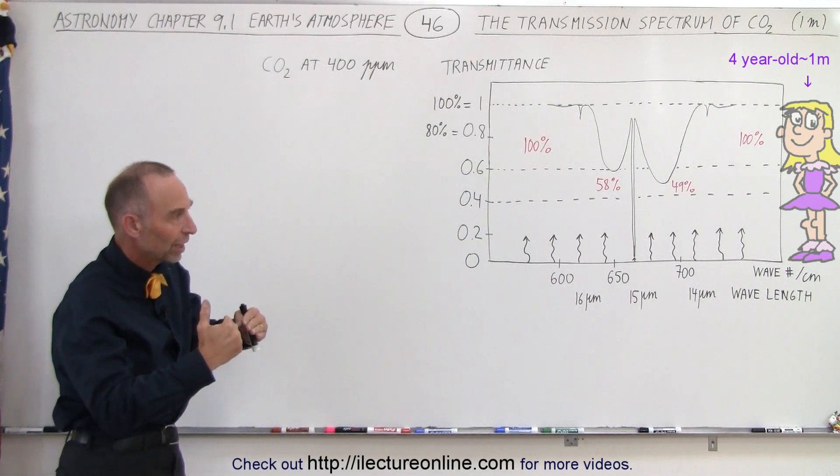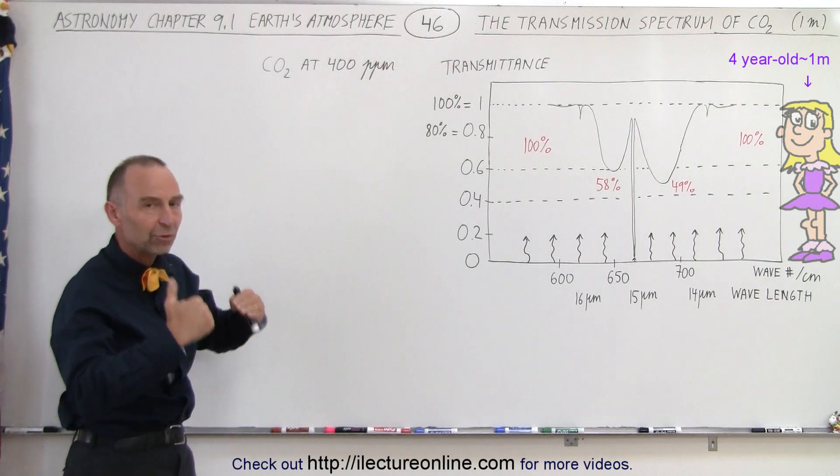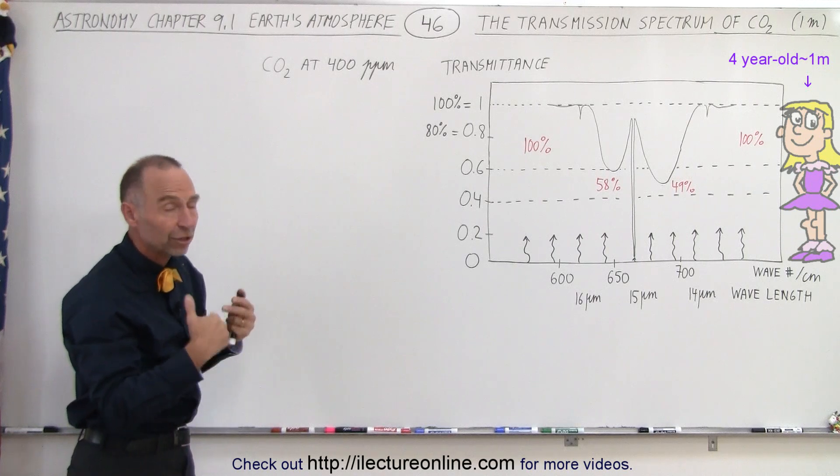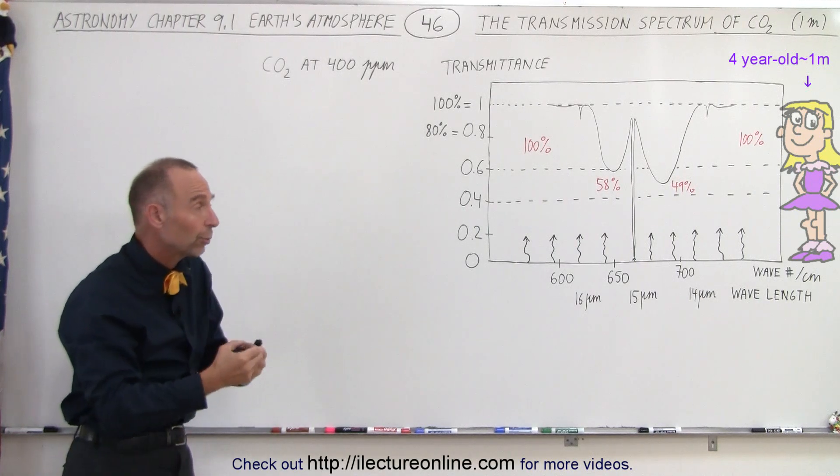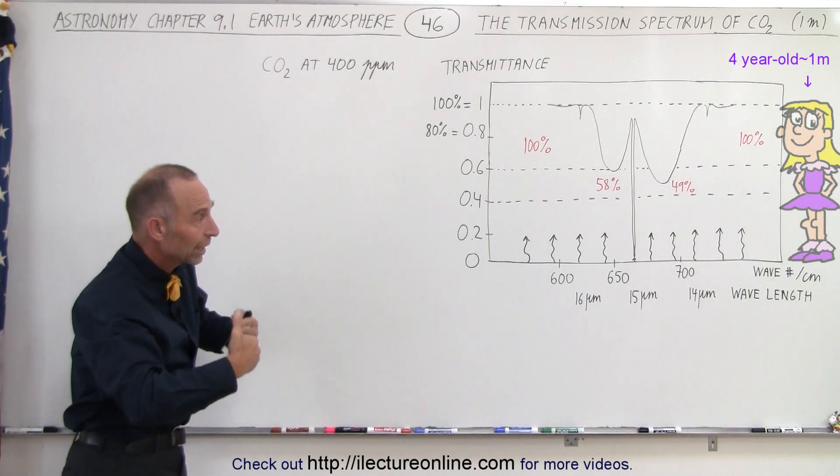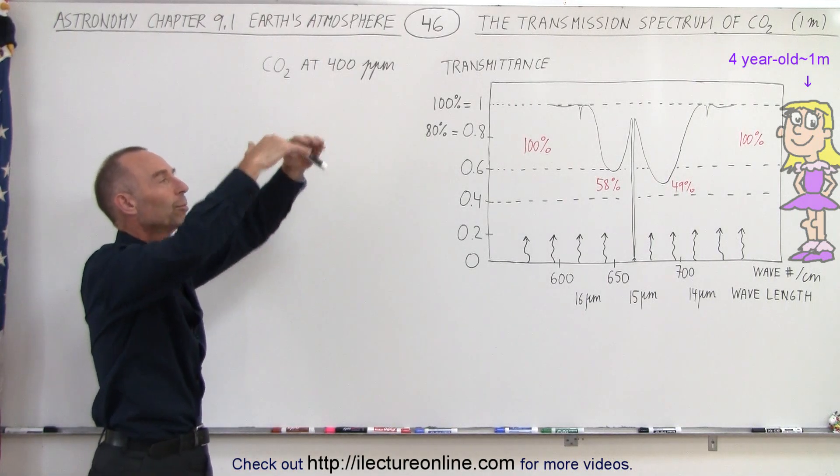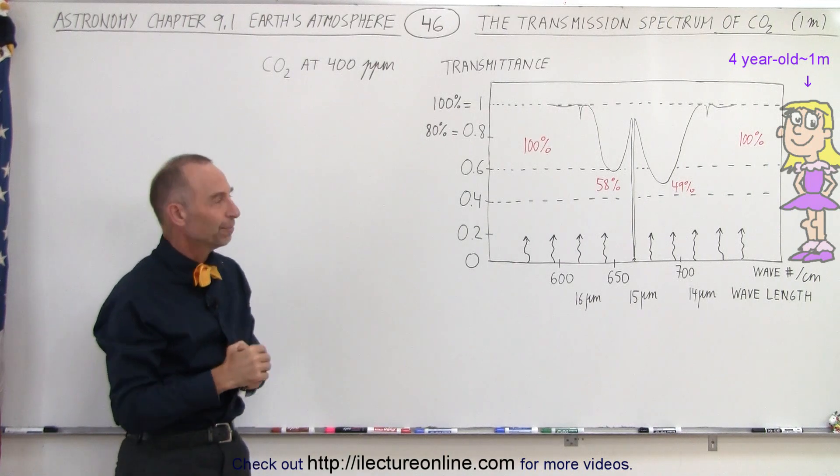What we're going to do now is we're going to take a look and see how that changes as we go higher and higher in the atmosphere to see the effectiveness of the carbon dioxide molecule in absorbing the radiation. In other words, we're going to take a look at it in terms of how much gets transmitted without being absorbed to that particular altitude.